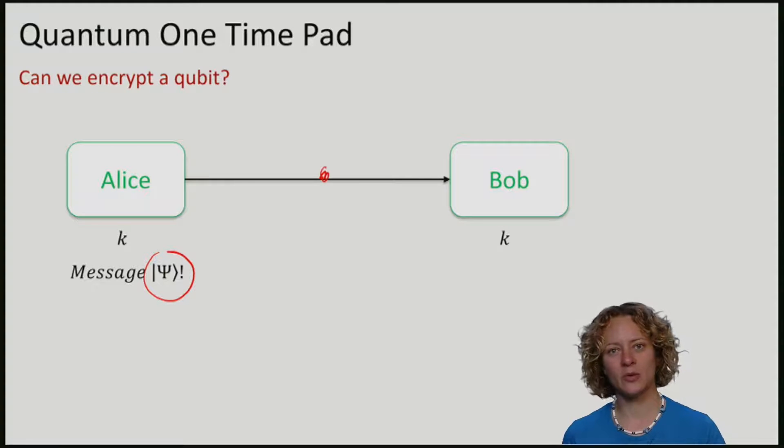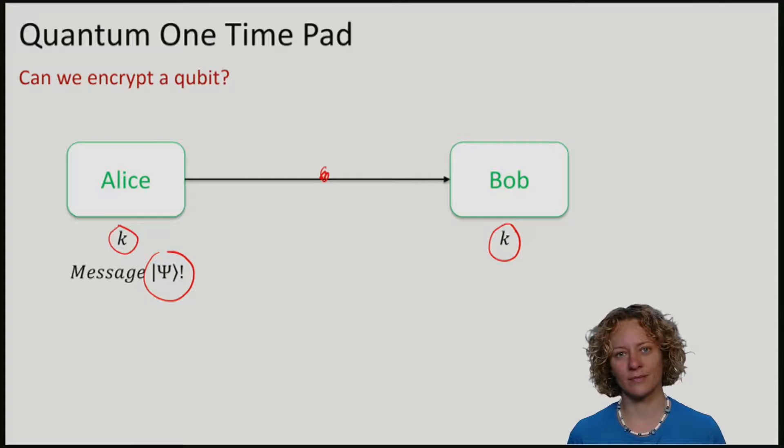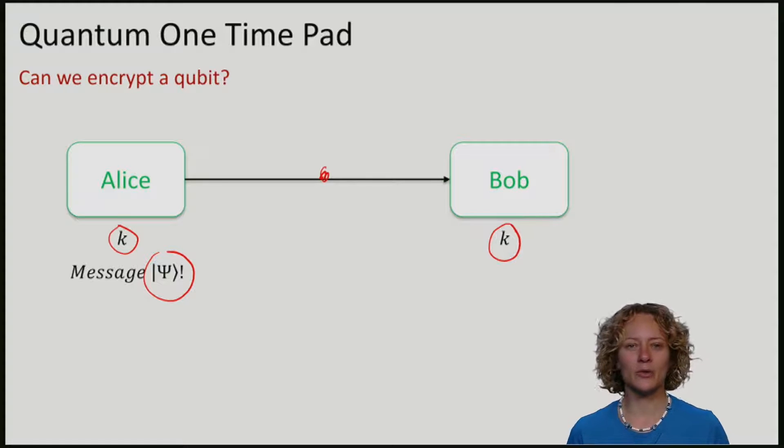As before, we will allow Alice and Bob a key. This remains a classical key, a bit string. We will again need an encryption procedure. It takes Alice's qubit psi and performs an operation on psi that depends on the key. Alice sends the result to Eve, who we will again assume knows nothing about the key.